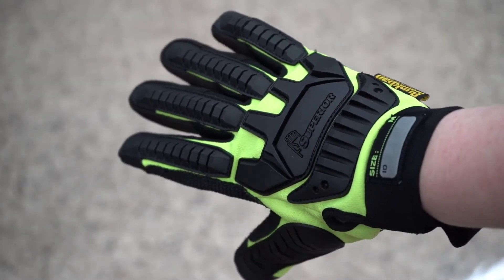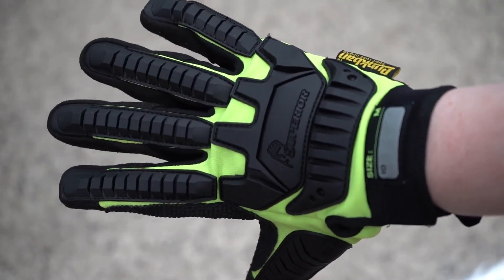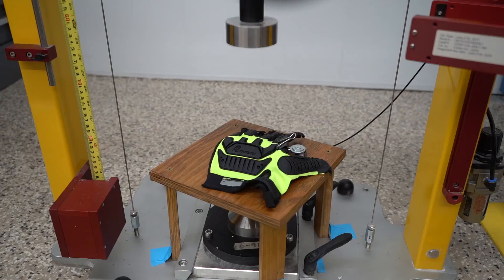The first glove we're going to test is our MXVS-BPB. This glove is designed to provide a base level of protection and typically allows about 6.6 kilonewtons of force to transfer through to the fingers and knuckles.